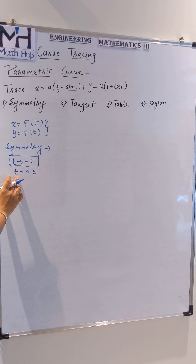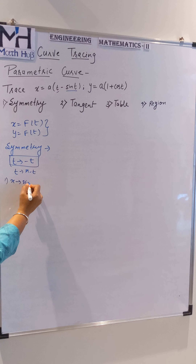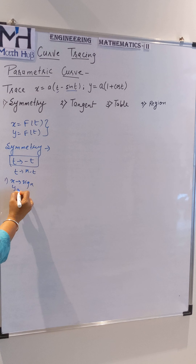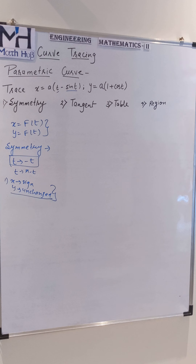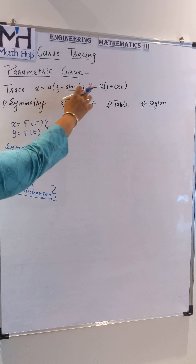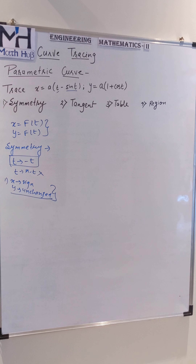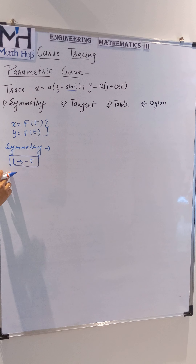Where you get a purely trigonometric function, you need to apply both rules to determine symmetry. Here, since we have an algebraic combination, we only check symmetry by the rule T changes to minus T. The symmetry rule states: if T changes to minus T and x changes by sign only (plus becomes minus, minus becomes plus) while y remains unchanged, then the curve is symmetric about the y-axis. Vice versa, if y changes by sign and x is unchanged, the curve is symmetric about the x-axis.